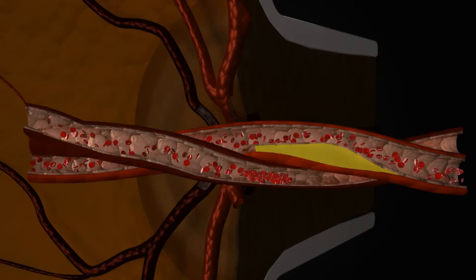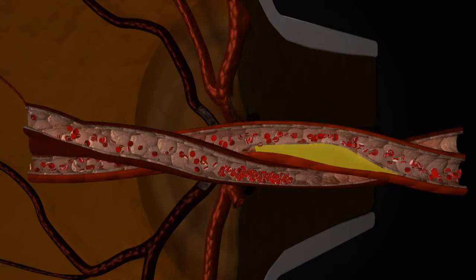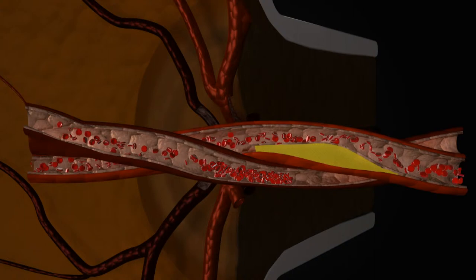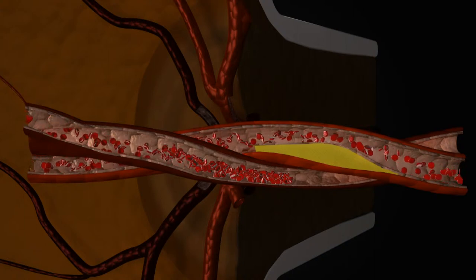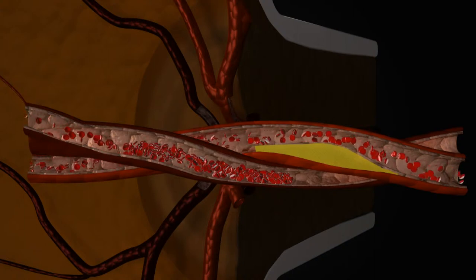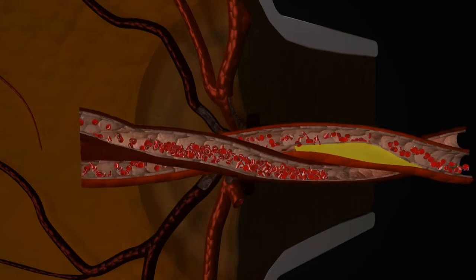If this happens, a clot can form in the central retinal vein. Once present, a clot can obstruct the vein, stopping the flow of blood out of the eye, which therefore limits the supply of blood into the eye.